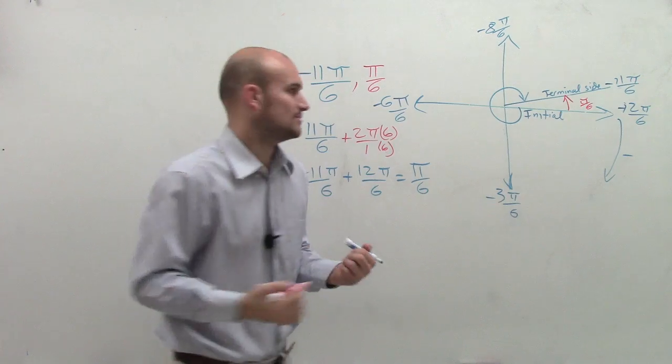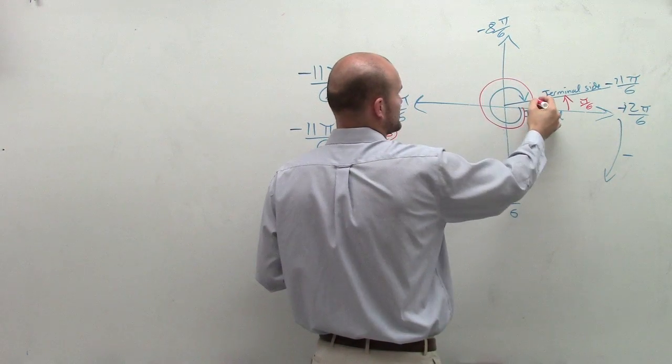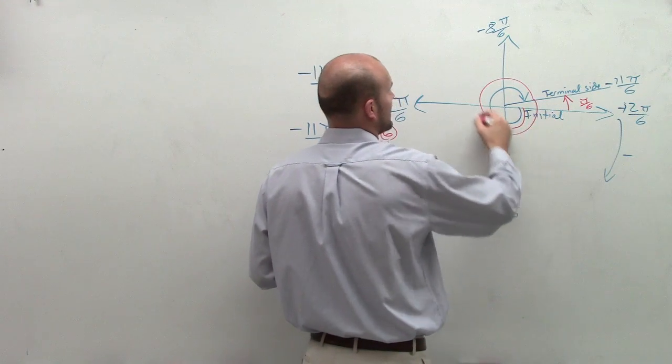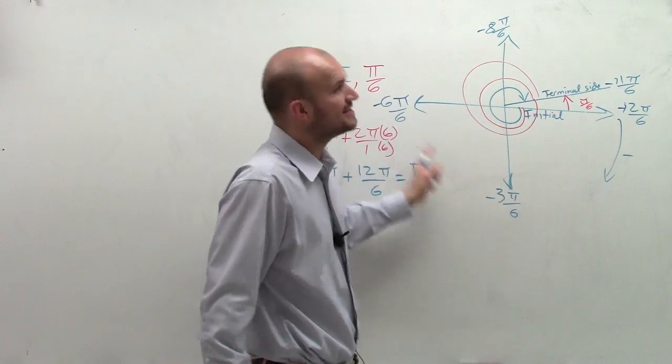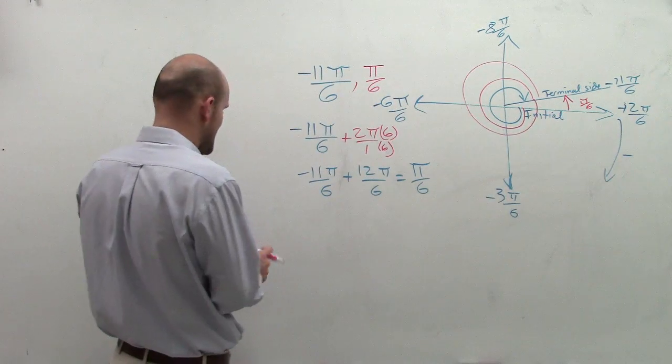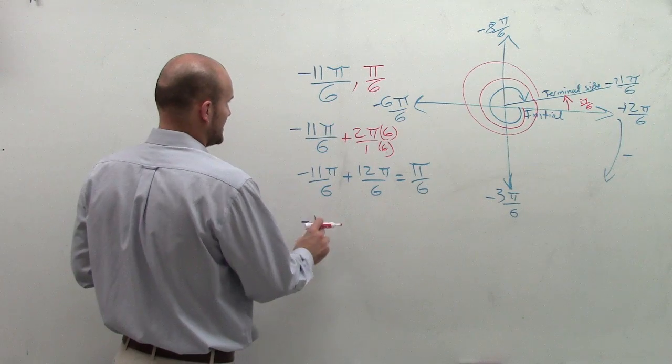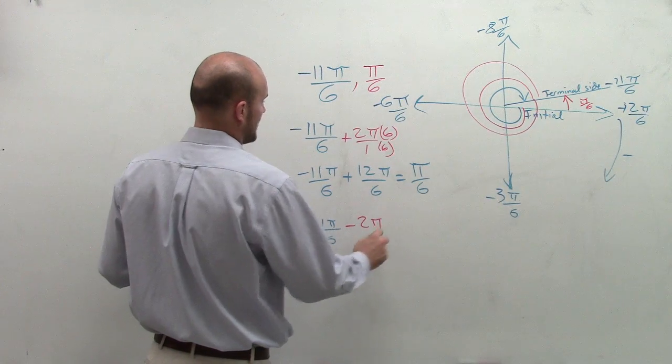So now, let's look at what other ways could we do this? Well, remember, we could also go in our whole direction, but then go again. And how far? Once I went to my terminal side, I went around another 2 pi, right? But I went in the negative direction. So I could also say negative 11 pi over 6 minus 2 pi.